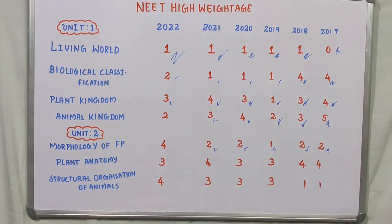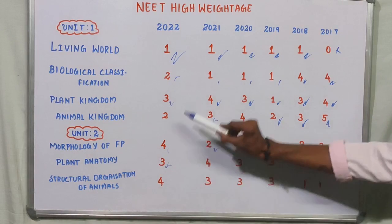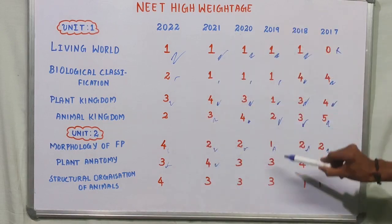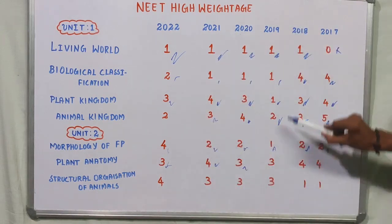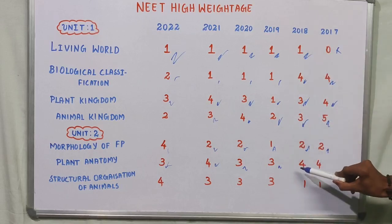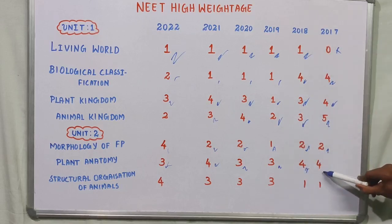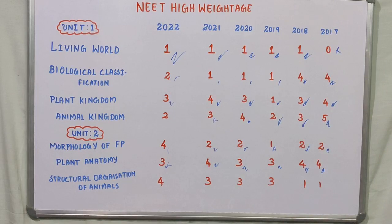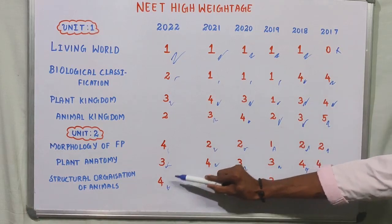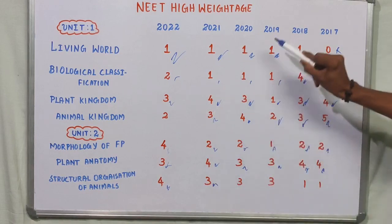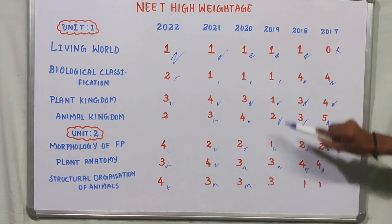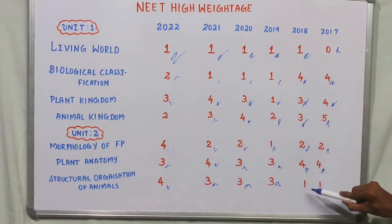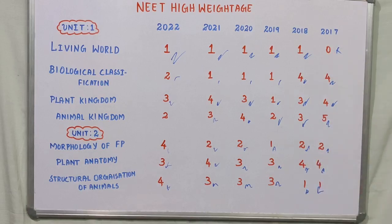Next, Plant Anatomy: 2022 had 3 questions, 2021 had 4 questions, 2020 had 3 questions, 2019 had 3 questions, 2018 had 4 questions, and 2017 had 4 questions. For Structural Organization of Animals: 2022 had 4 questions, 2021 had 3 questions, 2020 had 3 questions, 2019 had 3 questions, 2018 had 1 question, and 2017 had 1 question. This completes Unit 2.